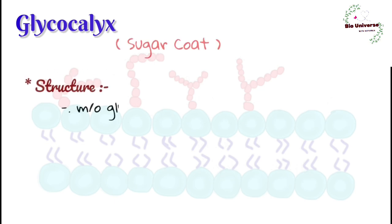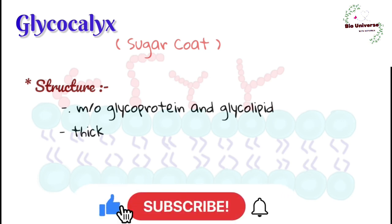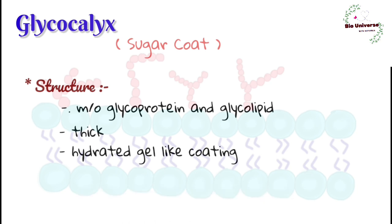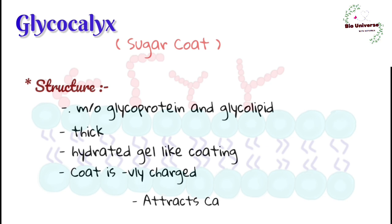Structure of glycocalyx: it is made up of glycoprotein and glycolipid. It is thick, approximately 500 to 200 nanometers in diameter. It is a hydrated gel-like coating on the luminal exterior of the vascular endothelium. The coat has negatively charged termini, those of sialic acid. These termini attract calcium ions and sodium ions; silicon and other materials can also be incorporated in the cell coat.